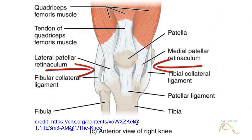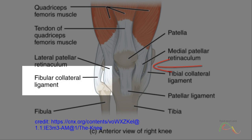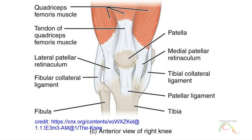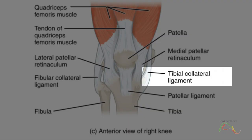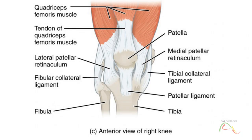The lateral collateral ligament, which is also known as the fibular collateral ligament, is on the lateral side and extends from the lateral epicondyle of the femur to the head of the fibula. The medial collateral ligament, also known as the tibial collateral ligament, runs from the medial epicondyle of the femur to the medial tibia. As it crosses the knee, the tibial collateral ligament is firmly attached on its deep side to the articular capsule and to the medial meniscus.